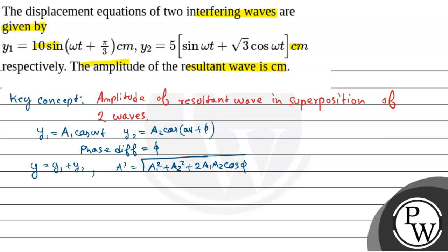As given in the question, y1 is equal to 10 sin(ωt + π/3) cm, and y2 is equal to 5 sin(ωt) + √3 cos(ωt) cm.